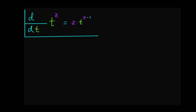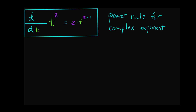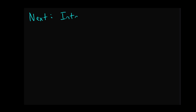So we've proved the power rule for differentiation with a complex exponent. The fact that the exponent is complex rather than real doesn't change the application of the rule — we bring the exponent down as a coefficient and reduce the exponent by 1. Next on our agenda is to prove the corresponding rule for antiderivatives, integrating t^z where t is real and z is a complex exponent.